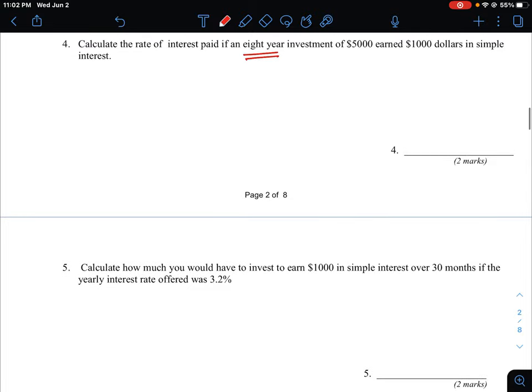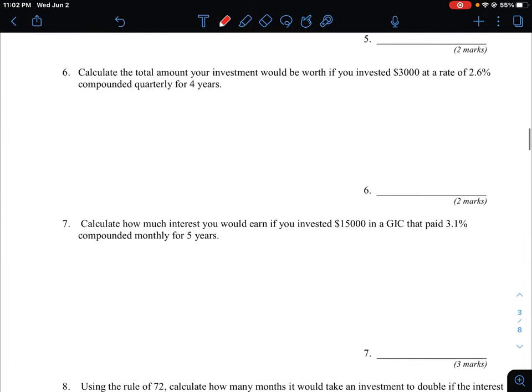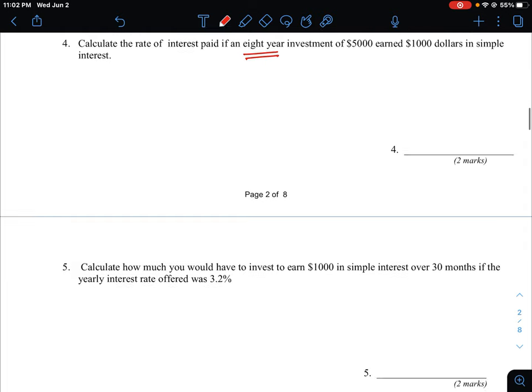So again, our simple interest formula is always I = PRT, and we'll just jump right in and put in the values here. Our interest is going to be $1,000. We know our principal is going to be $5,000.